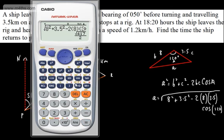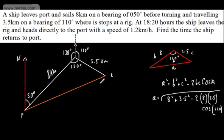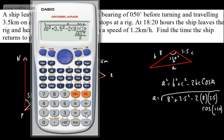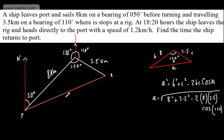Hitting enter gives me the root of 417 over 2 — so that's this length right here. Let's go ahead and find a decimal answer for that, and that's going to be 10.21. So this distance is approximately 10.21 kilometres.